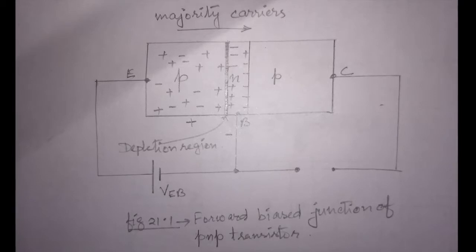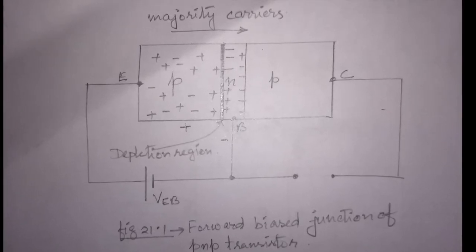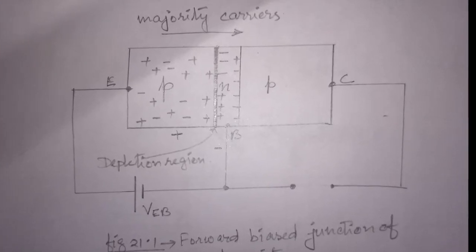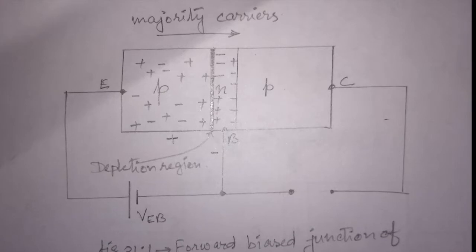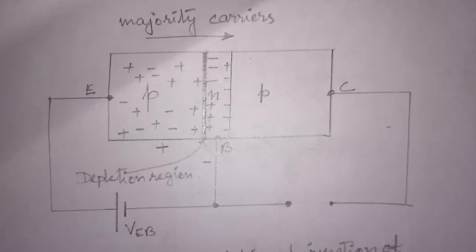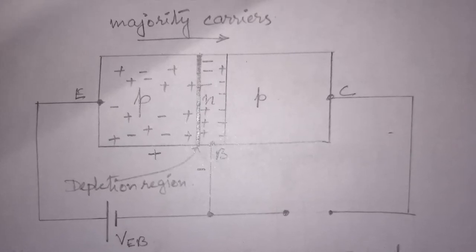Let us consider the PNP transistor as shown in this figure. In general, we will forward bias the emitter base junction and keep the base collector junction open. The depletion region thickness is reduced due to the applied forward bias potential, which results in heavy flow of majority carriers from P to the N region.